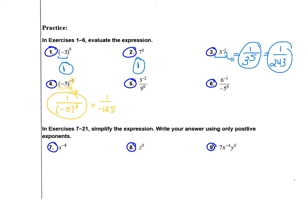In number 5, there are two things going on. The 3 has a negative exponent, so it's going to move to the bottom and become a positive exponent. Then 9 to the 0 power is just 1, so on the bottom there's a 1. If we remove everything from the top, we replace it with a 1. So we have 1 over 3 squared, or you could write it as 1 over 9.